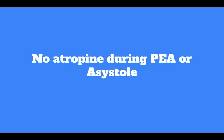Although there is no evidence that atropine has a detrimental effect during bradycardic or asystolic cardiac arrest, routine use of atropine during PEA or asystole has not been shown to have a therapeutic benefit. Therefore, the AHA has removed atropine from the cardiac arrest guidelines.